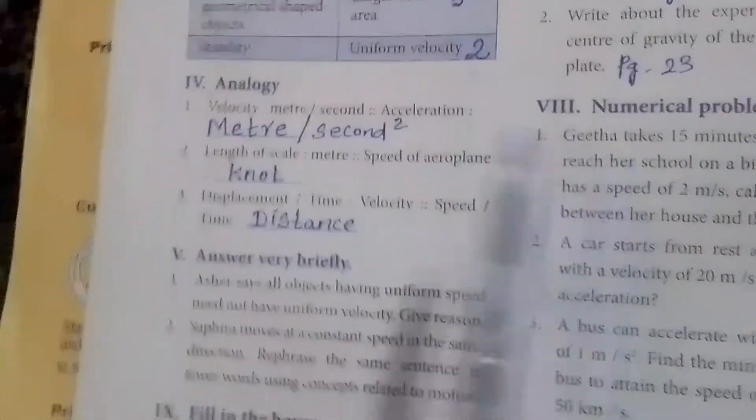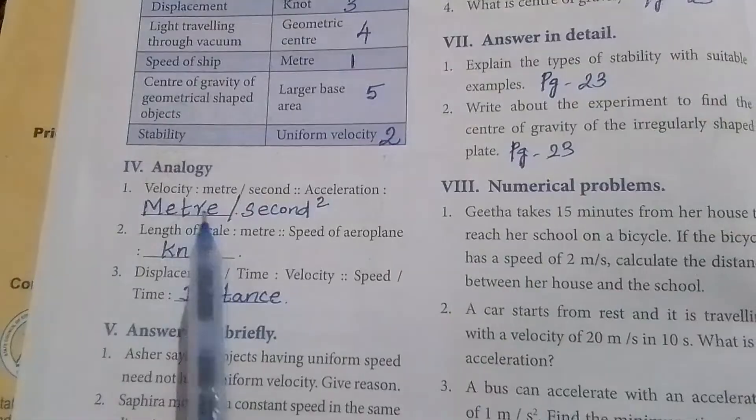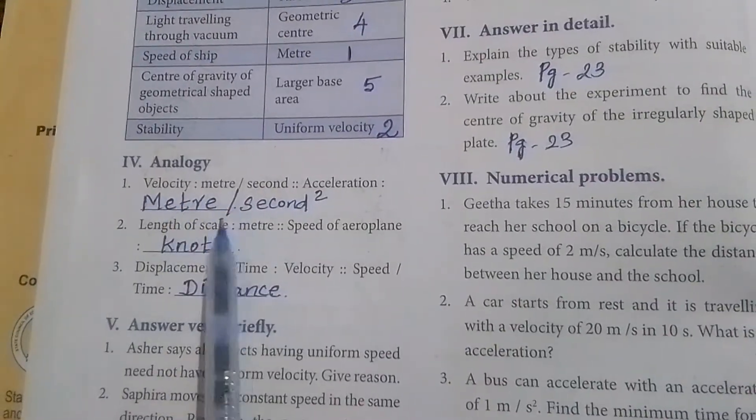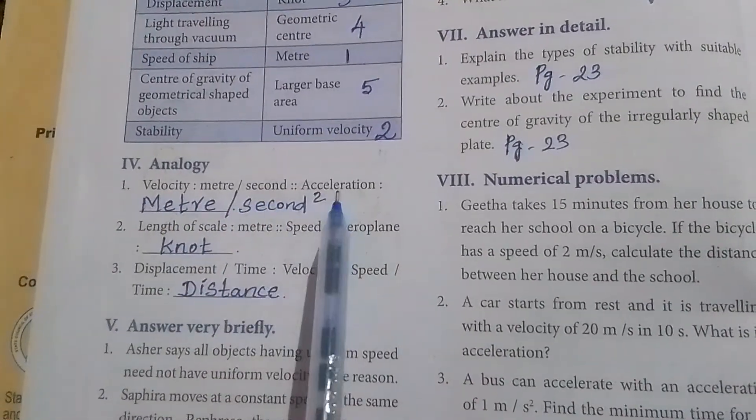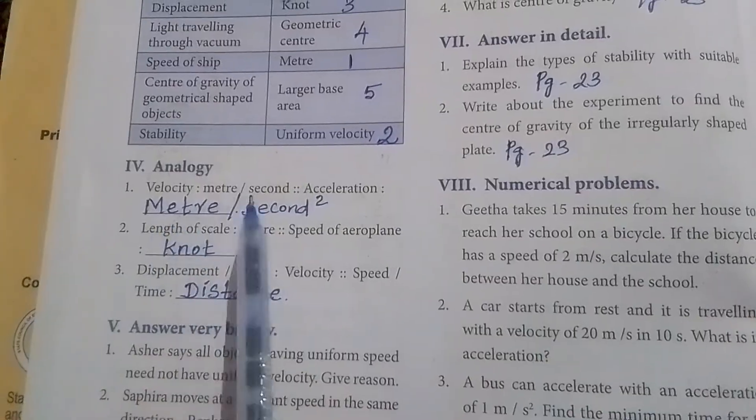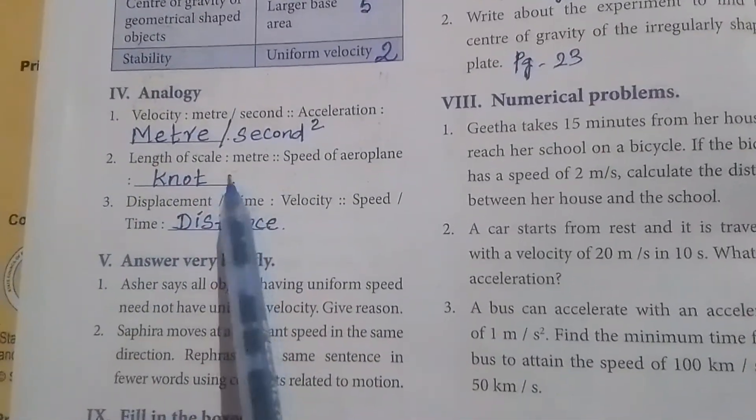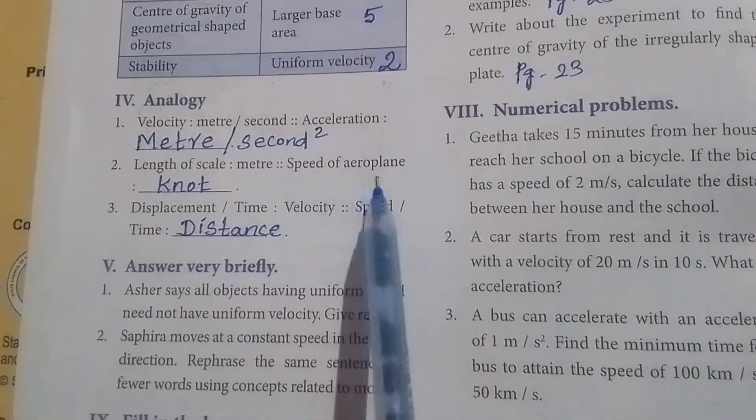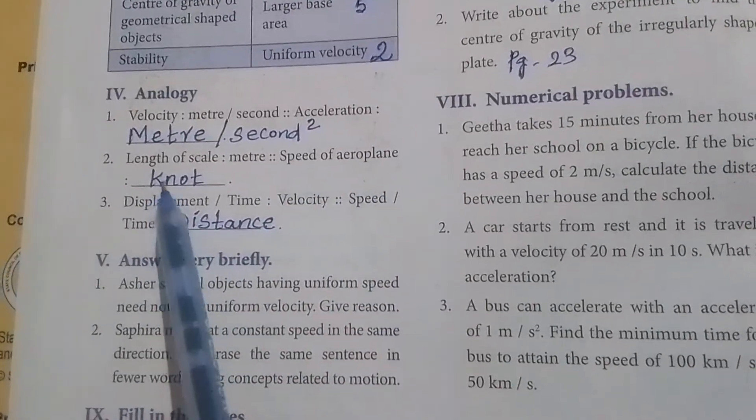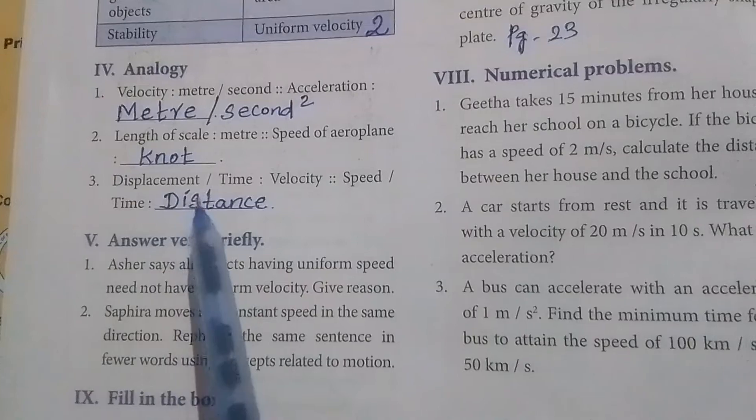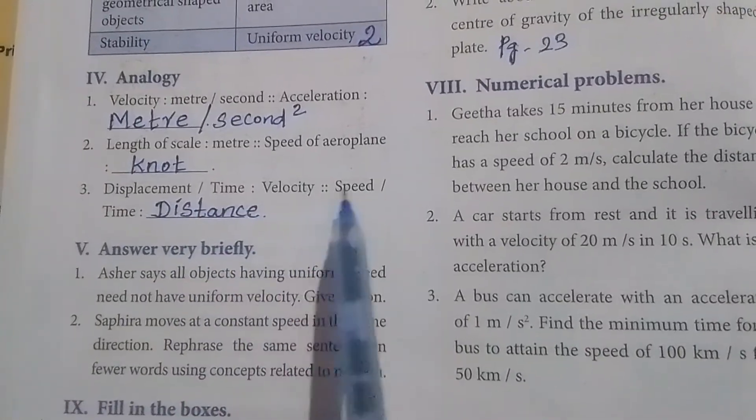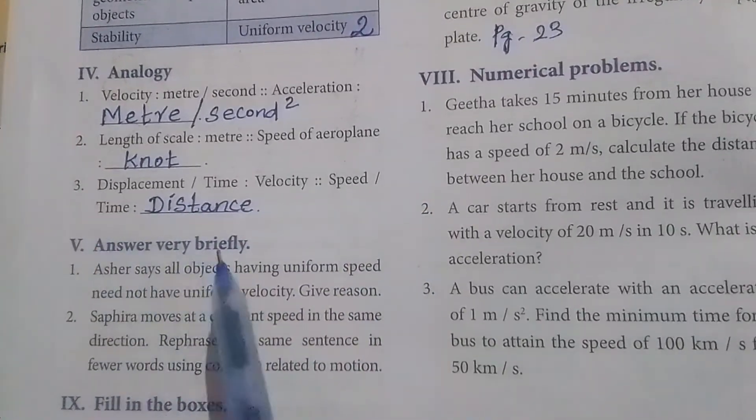Fourth Roman letter: Analogy. First one: Velocity meter per second, speed - then acceleration meter per second squared. Second one: Length of scale meter, speed of aeroplane - answer, knot. Third one: Displacement by time is velocity, speed by time - the answer is distance.